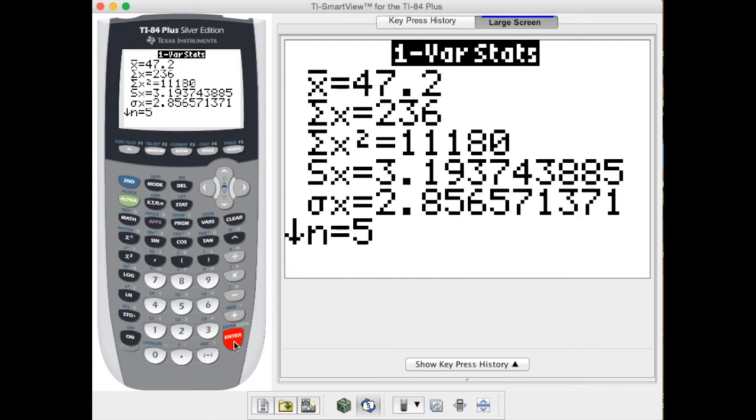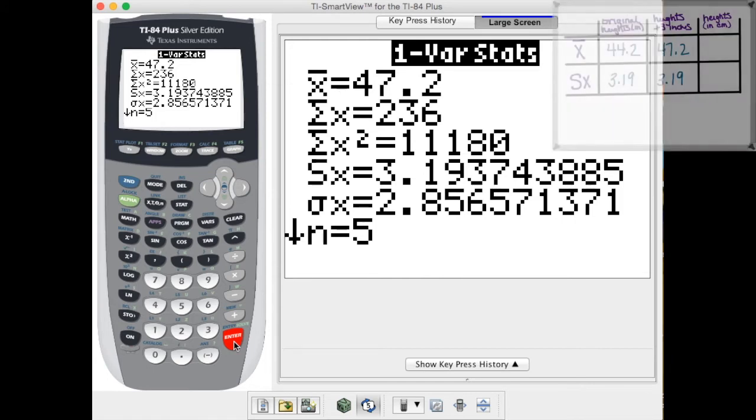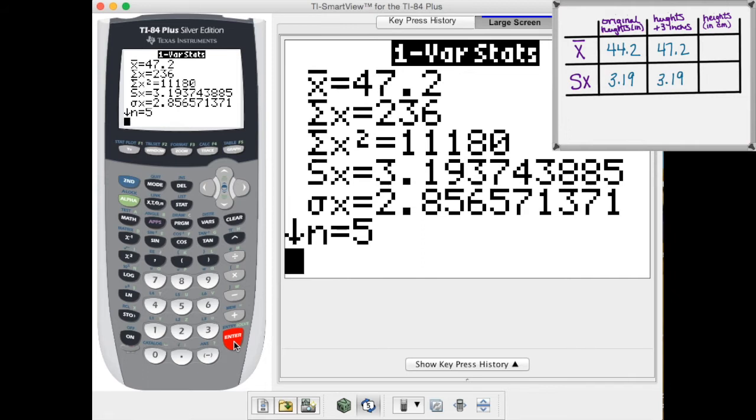Let's make a table of this information. You can see up in the right hand corner I have the original data listed as well as this new data where we added three to each person.